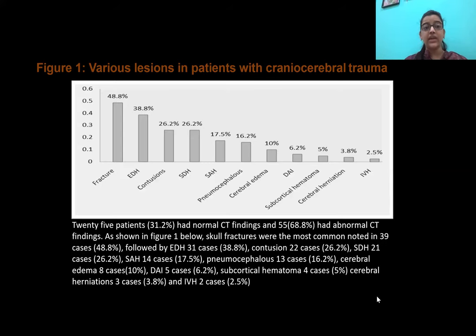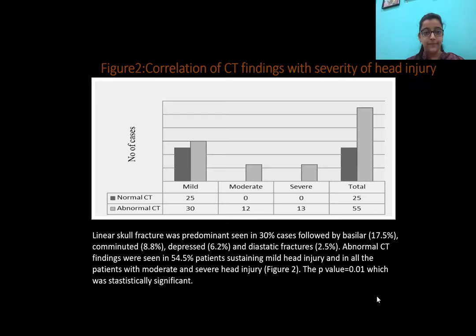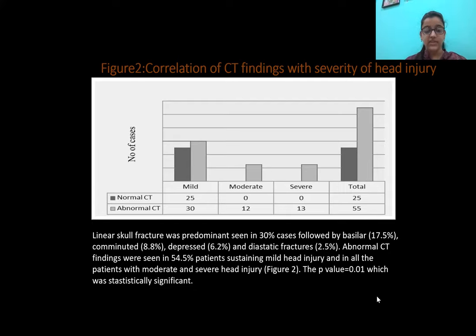A graph showing various lesions in patients with cranio-cerebral trauma revealed that 25 patients — 31.2% — had normal CT findings, while 68.8% — 55 patients — had abnormal CT, of which 48.8% had fractures, followed by EDH, contusions, and intraventricular hemorrhage. Linear skull fracture was predominant, seen in 30% of cases, followed by basilar, comminuted, depressed, and diastatic fractures. Abnormal CT findings were seen in 54.5% of mild head injury patients and in all moderate and severe head injury patients, with a p-value of 0.01, which was statistically significant.